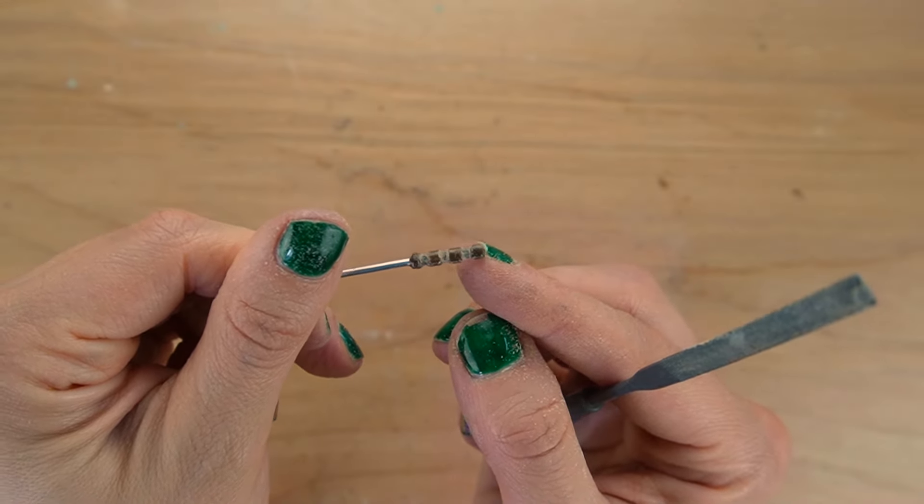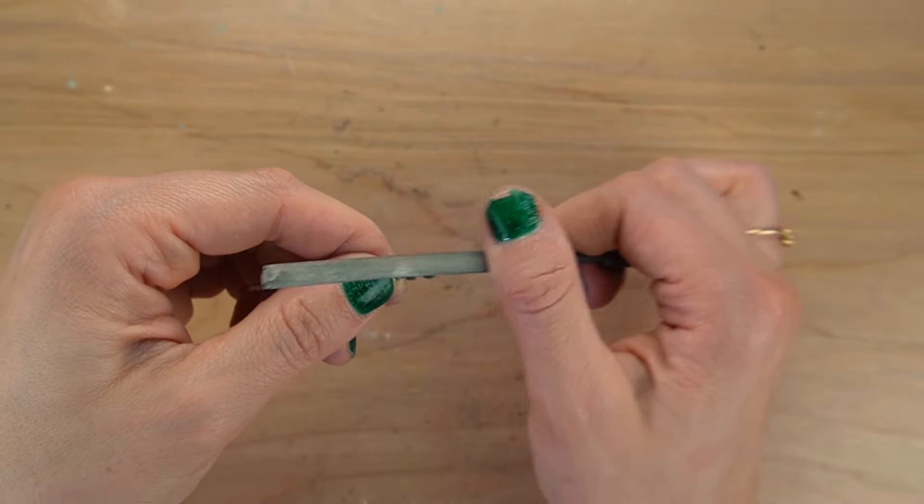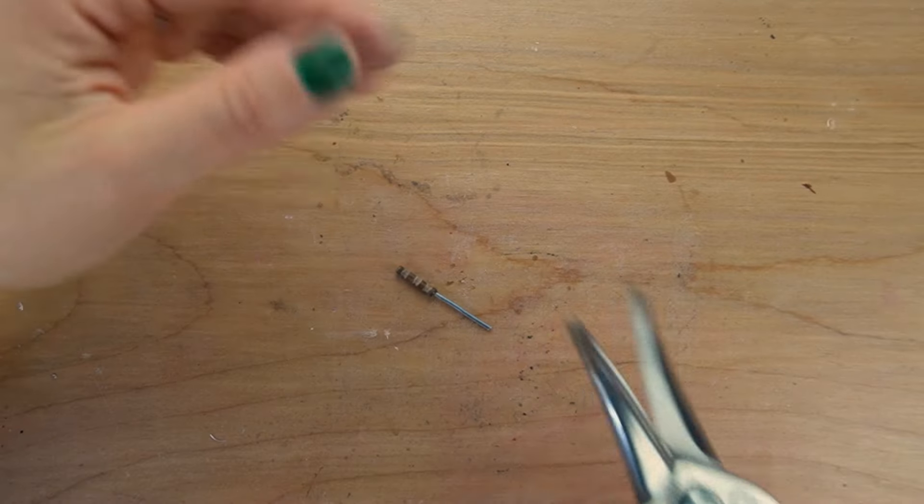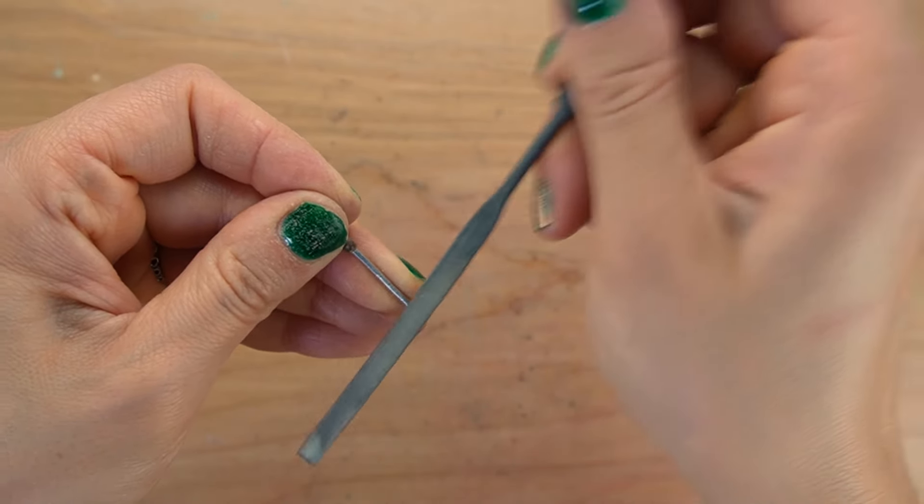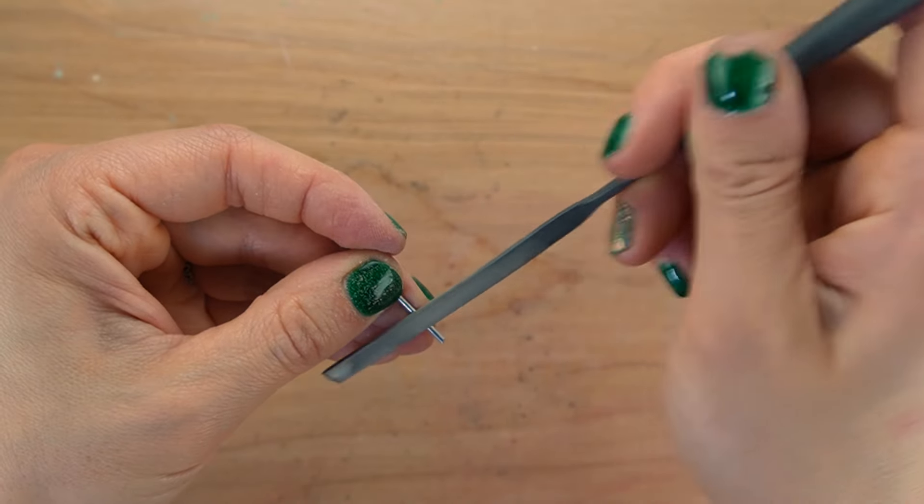I'm using tin snips to give it a trim. I'm using a file to create texture on the surface to make this look like a knife sharpener.